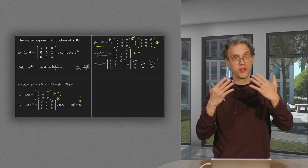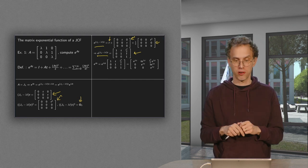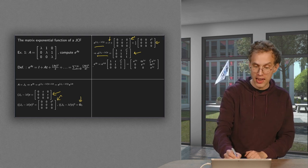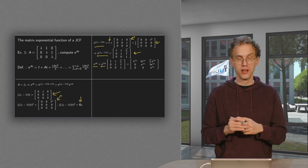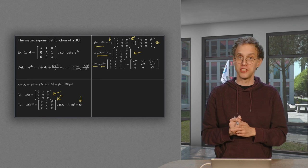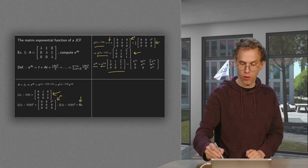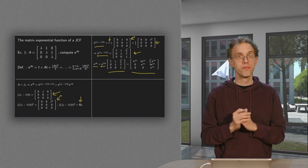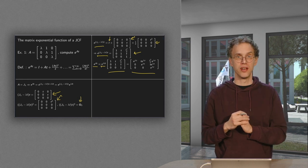So in this way, you can compute e to the power J lambda minus lambda I times t for any Jordan block. You recognize the pattern. And then e to the power At is easy, because you only have to multiply by e to the power lambda I times t. But this multiplication only gives you an e to the power lambda t on all elements. So what you get is the same matrix, but then all elements multiplied by e to the power lambda t. So there you have e to the power At if A equals a Jordan matrix.